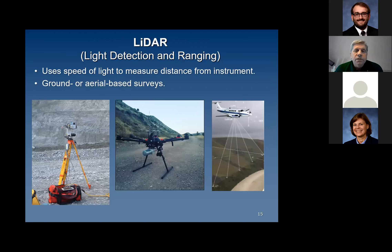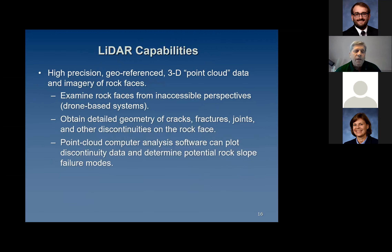Next on the technology list is LiDAR — light detection and ranging. It works very similar to surveying in that it measures the distance from the instrument to the slope and compares new readings to previous readings. It can be done terrestrially, by drone, or by airplane. It can cover a very large area and is very accurate. One nice thing about LiDAR is that you can create a point cloud that can be geo-referenced, allowing you to take very precise measurements. Software can also analyze the data to identify geologic discontinuities that may be of interest to your project.